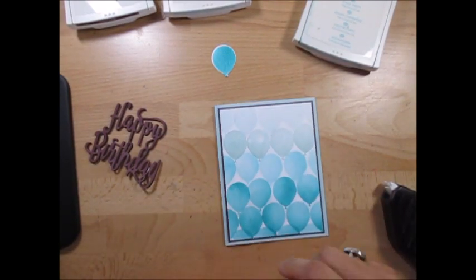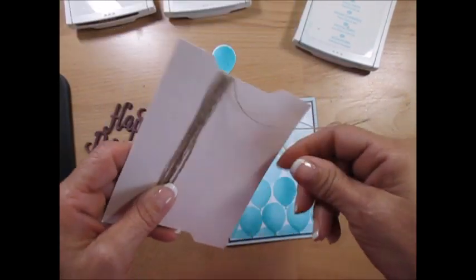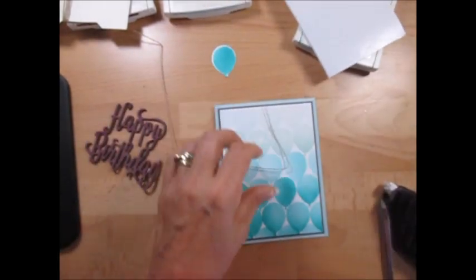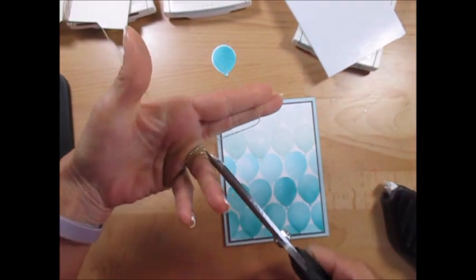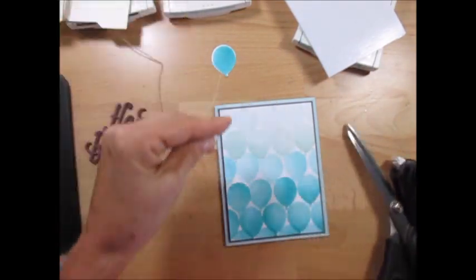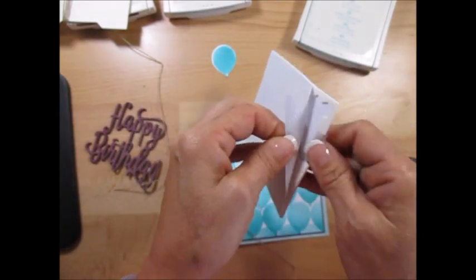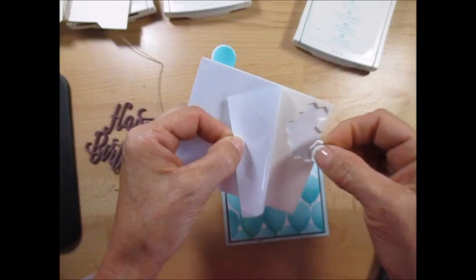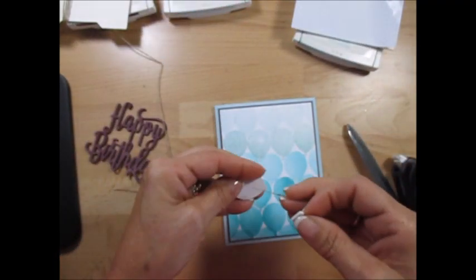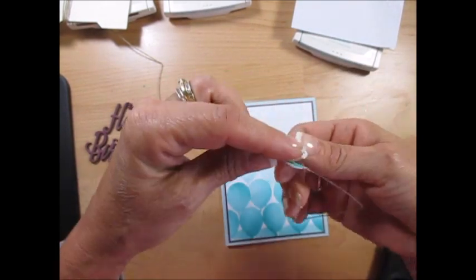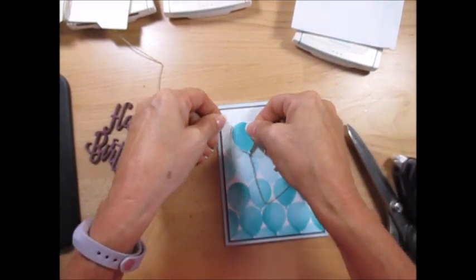Now we're going to use linen thread. I'm going to cut a piece. I never measure really. And I need some dimensionals. We're going to take a dimensional, put the linen thread in the back, put your dimensional on top. This is going to go about here.